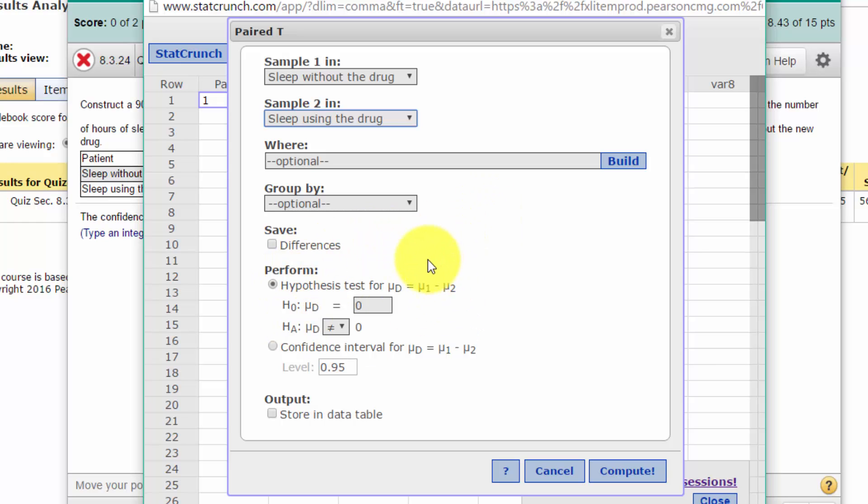We don't need to change the where and group by options on here, and we're not going to do the hypothesis test, which you could just by clicking compute. It would calculate the hypothesis test for the null of the mean difference equal to zero. What we're going to do is the confidence interval, and it's for 0.9, an alpha of 0.10 or 10%.